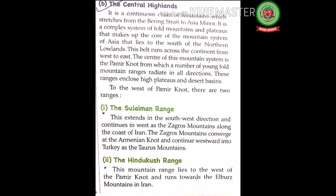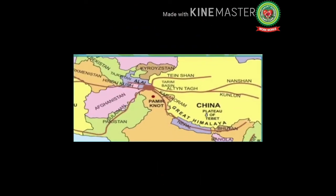The central highlands is a continuous chain of mountains which stretches from the Bering Strait to Asia Minor. It is a complex system of fold mountains and plateaus that makes up the core of the mountain system of Asia, lying to the south of the northern lowlands. This belt runs across the continent from west to east.